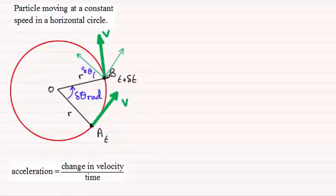And because V here is perpendicular to OB, this angle in here must be 90 minus delta theta. But then these two components are perpendicular to one another. So this then must be delta theta.